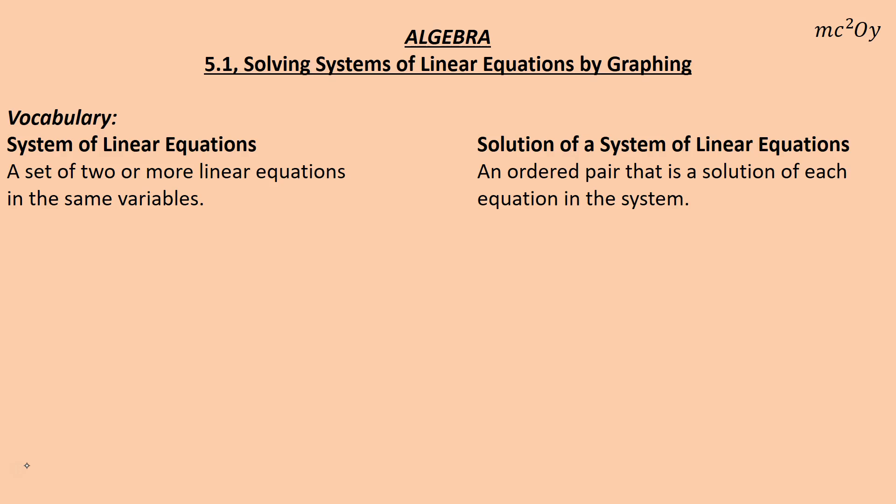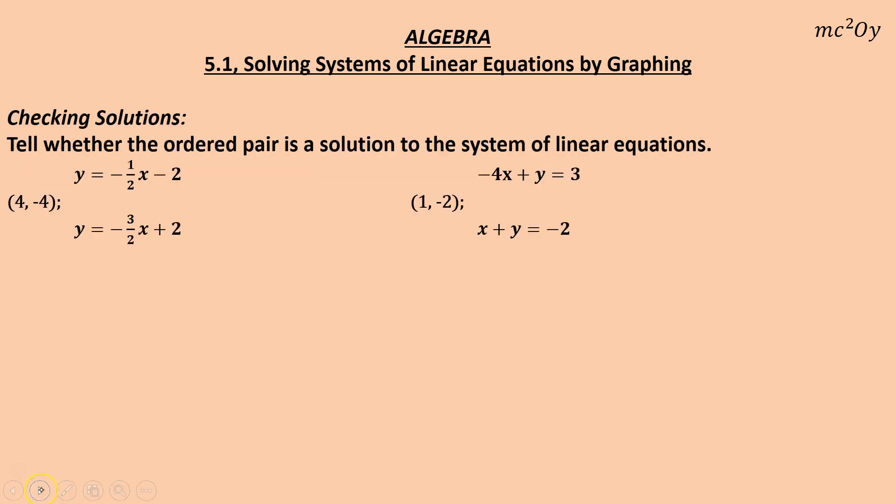A solution to a system is an ordered pair that will make both of the equations true. So when you put in an x, y value for both, you get a true statement. So for instance, if I have, here's a system right here. A lot of times you'll see a bracket around a system like this, holding it together. So I'm saying, out of this system, these two equations,